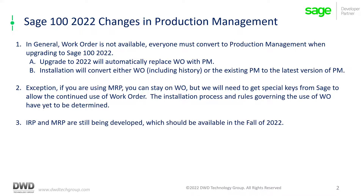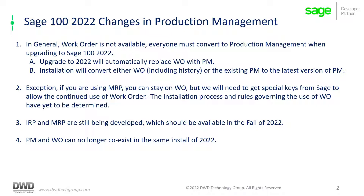MRP is still in development and will come out later this year in a subsequent update to 2022, so even though you had MRP in previous versions, it is not available at this time. Production management and work order cannot co-exist in the same install. Previously you would have access to a work order history inquiry, but with the ability to now convert work order history, work order is no longer available.